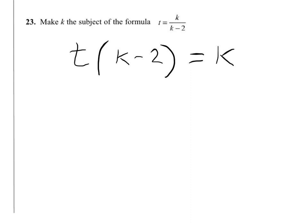What we want to end up with is k equals something. So we need to open out the brackets. It's t times k minus 2t equals k, and we get the k terms on the left and anything else on the right.